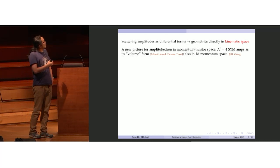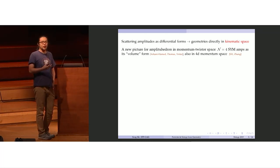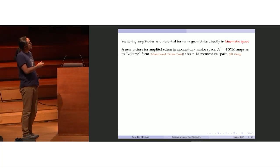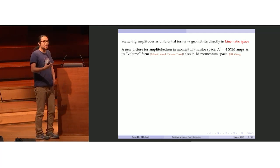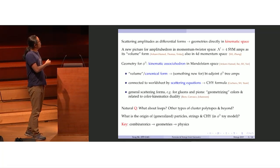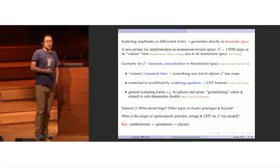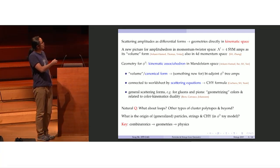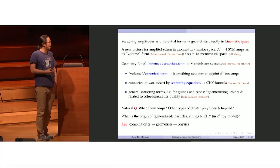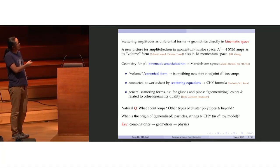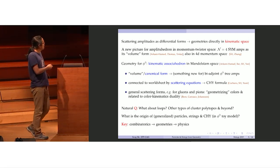Over the past few years, we realized that by viewing scattering amplitudes not as rational functions but really as differential forms in kinematic space, we can see this geometry not in some auxiliary space but directly in kinematic space where amplitudes are actually living. This was first done for N=4 super Yang-Mills, where the amplituhedron has been realized as a positive geometry in momentum twistor space. Quite strikingly, there are even geometries for the so-called bi-adjoint phi-cube theory: at tree-level, this is just the associahedron polytope, or the cluster polytope of type A, directly in Mandelstam space, and its canonical form gives you the bi-adjoint phi-cube tree amplitude.